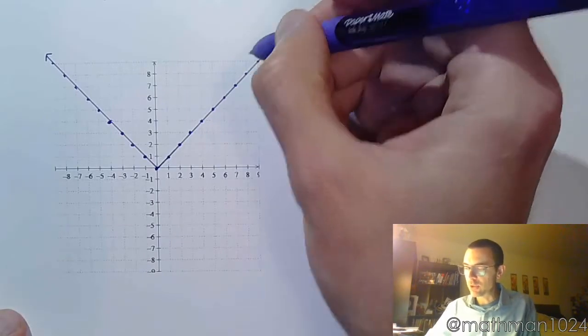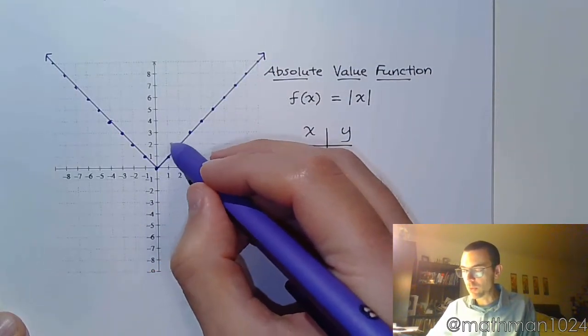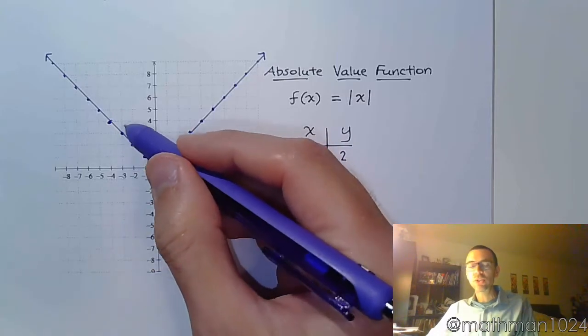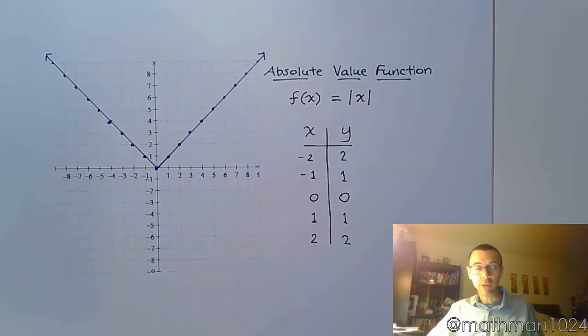If you can identify the slope here, which is up 1, over 1, on the other side, it's up 1 to the left 1. So it's just a slight little reversal, but it's still linear.